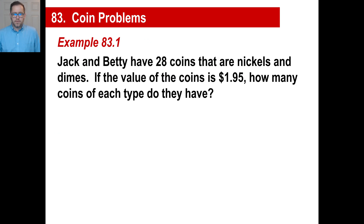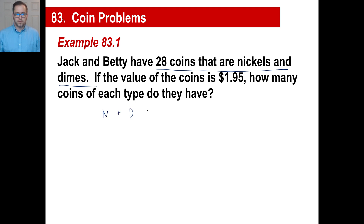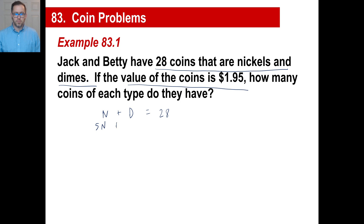Jack and Betty have 28 coins that are nickels and dimes. Stop right there — nickels plus dimes equals 28. We can't solve it yet because there's only one equation and we need two. The second piece: the value of the coins is $1.95. So the second equation is 5 times the nickels plus 10 times the dimes equals 195 cents.